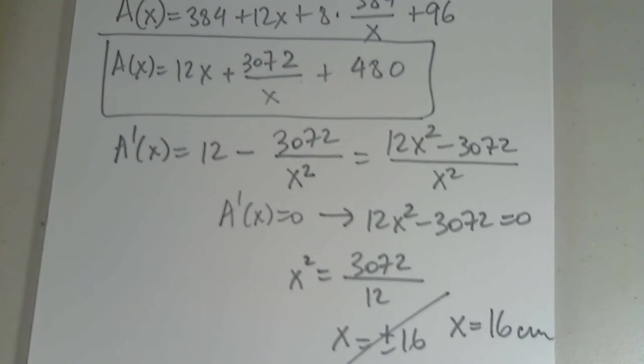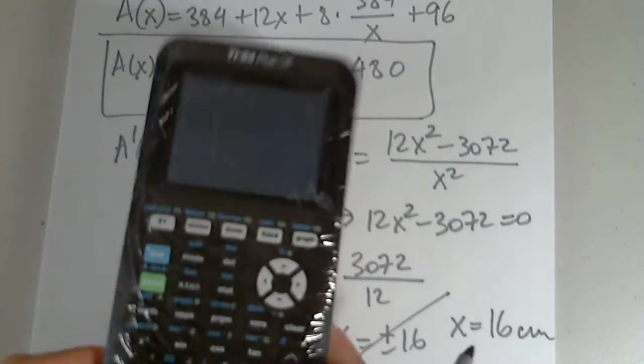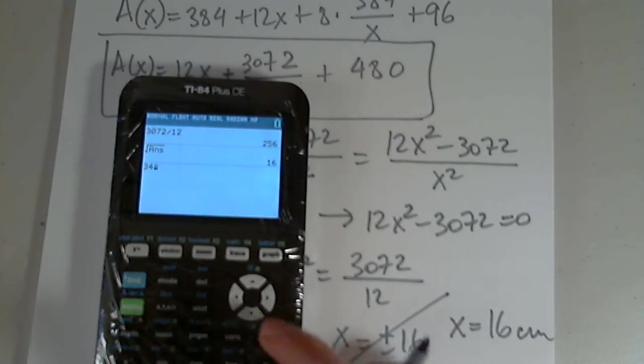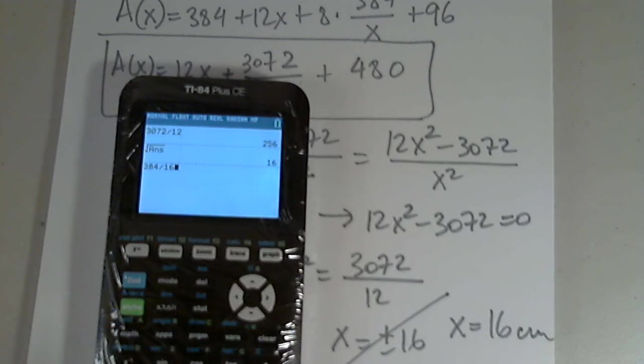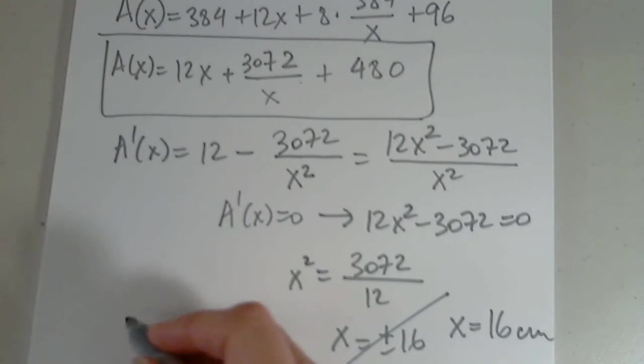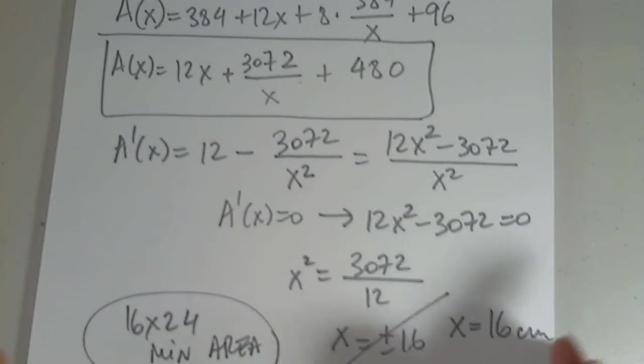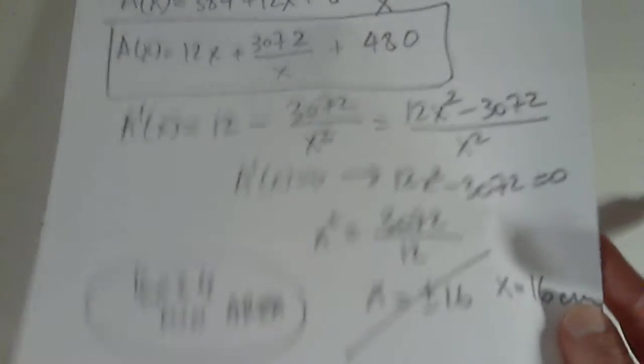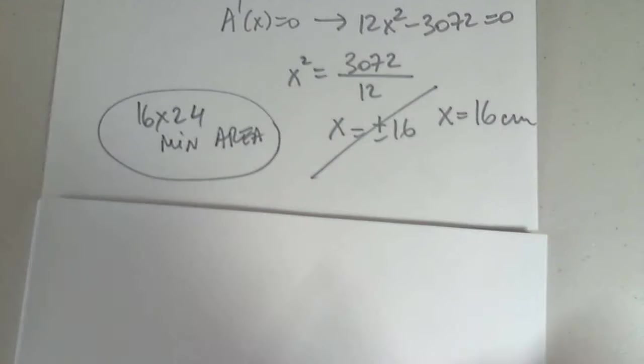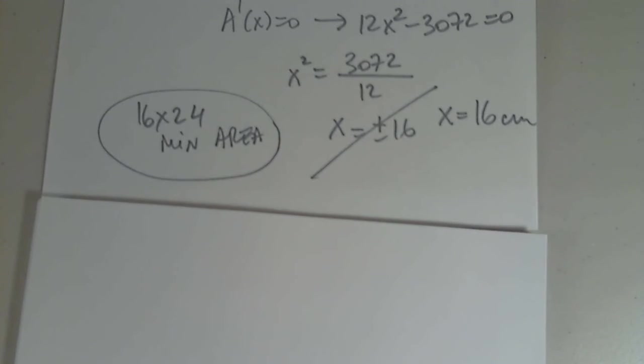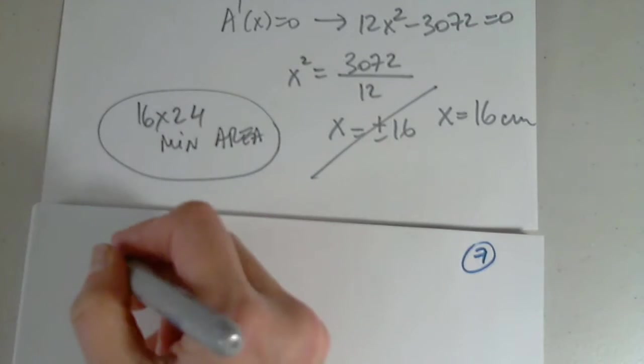So it means that the dimensions will be, so 384 divided by 16 is 24. So the dimensions will be 16 by 24 for the minimum area. This means nothing. It means nothing. Because I have not shown that this is true. So that value gives a minimum. Since I have not convinced you yet, I have to try. So what I'm going to do, I have to show this.